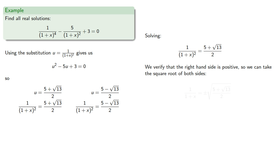So we can take the square root of both sides. And because we're taking a square root, we need to make sure that we include both the positive and negative square roots.